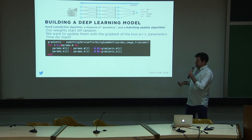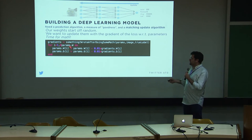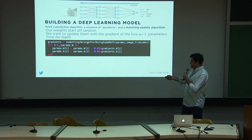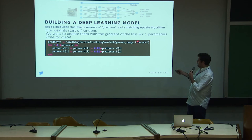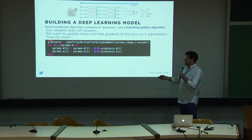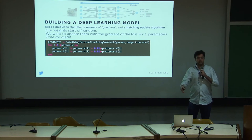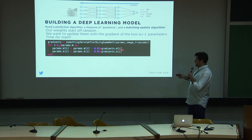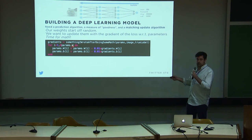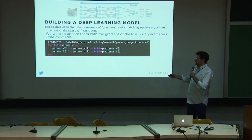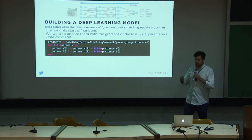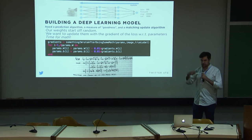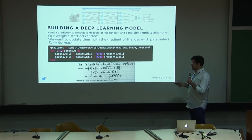The matching update algorithm — getting updates to the parameters that make sense — takes some thinking. You have to do some calculus to write a new function. This function takes in the parameters, the image, and the true label, and gives me something called gradients — the updates I'll apply to my parameters to make better predictions. You scale the gradients down a little and shift your parameters in that direction. Getting these gradients is boring, error-prone, and slows you down because you have to do a bunch of math and then verify it — you're just applying mechanical calculus rules to code you've already written.